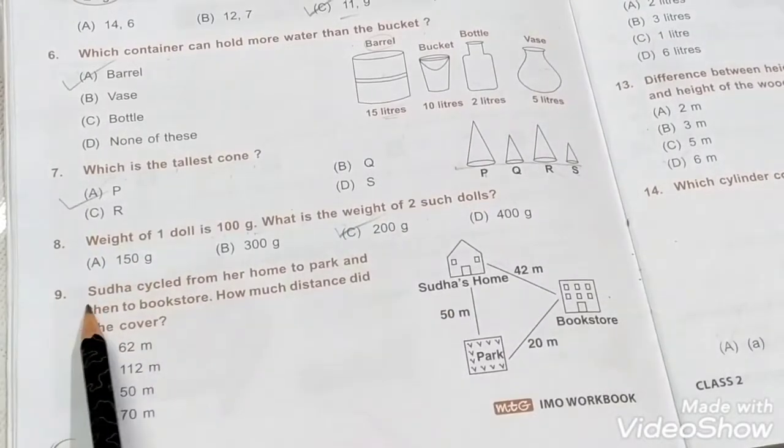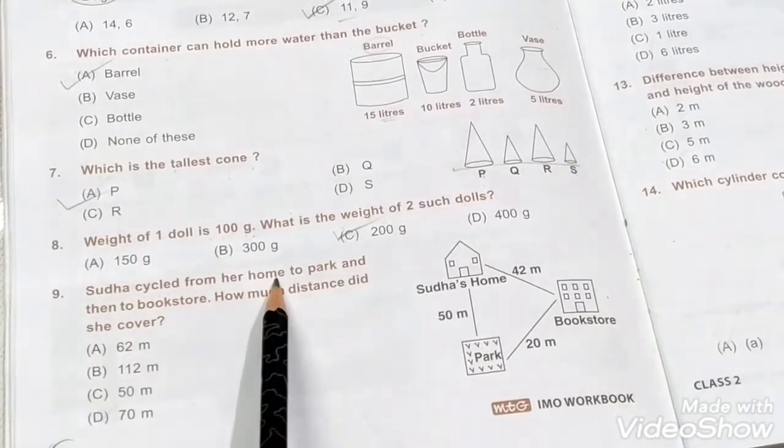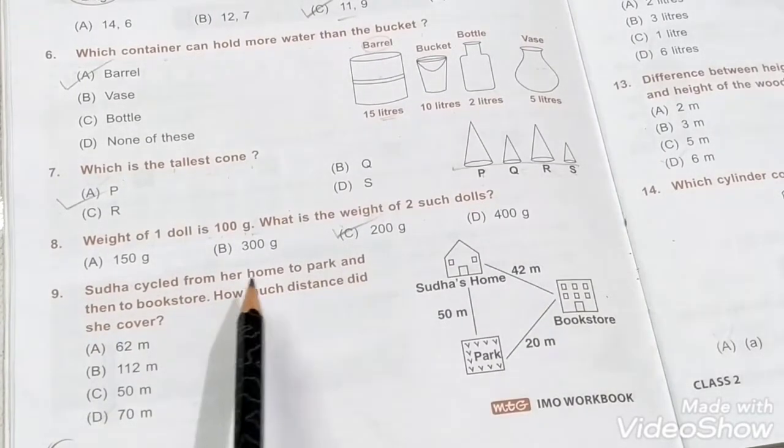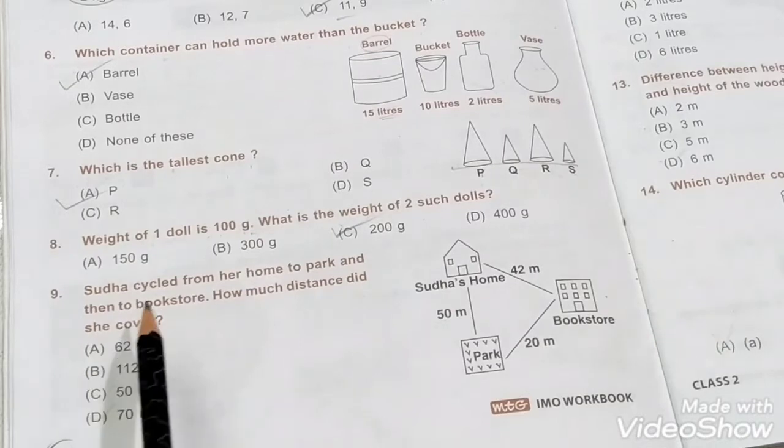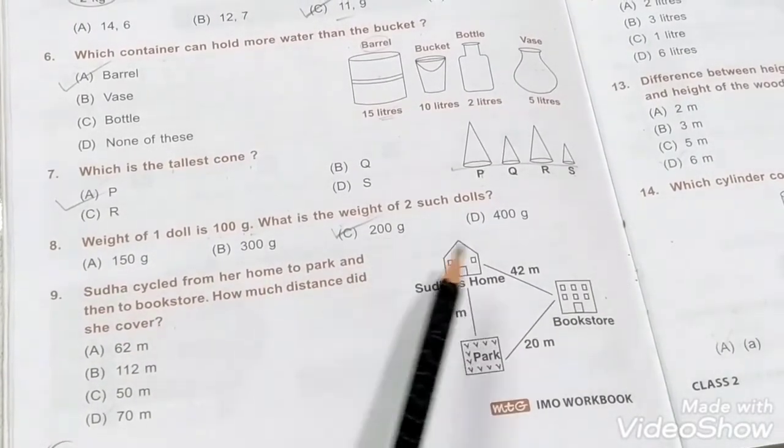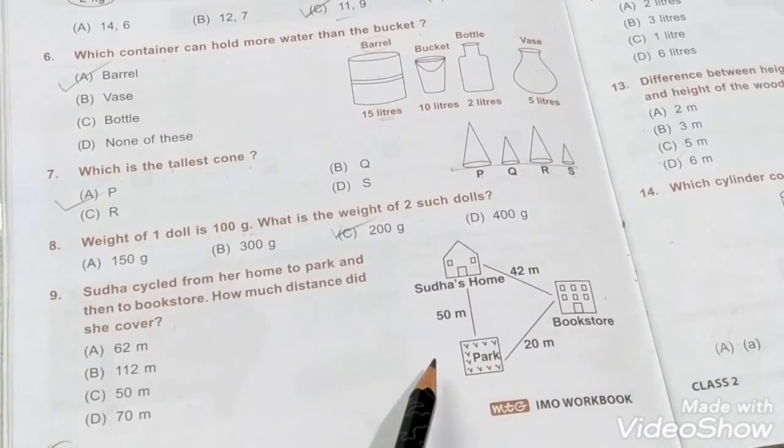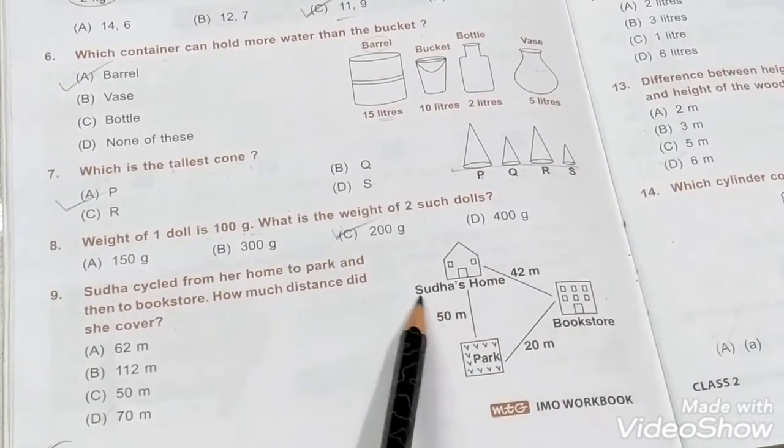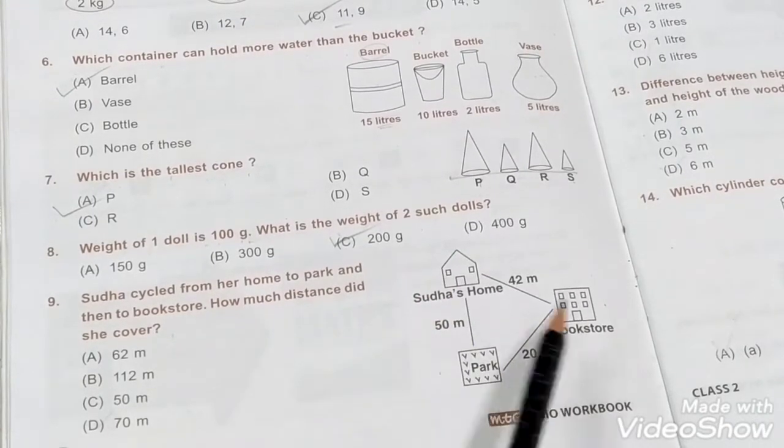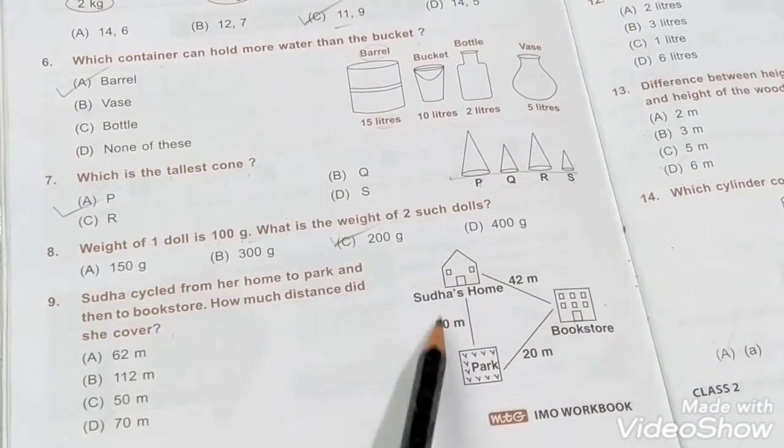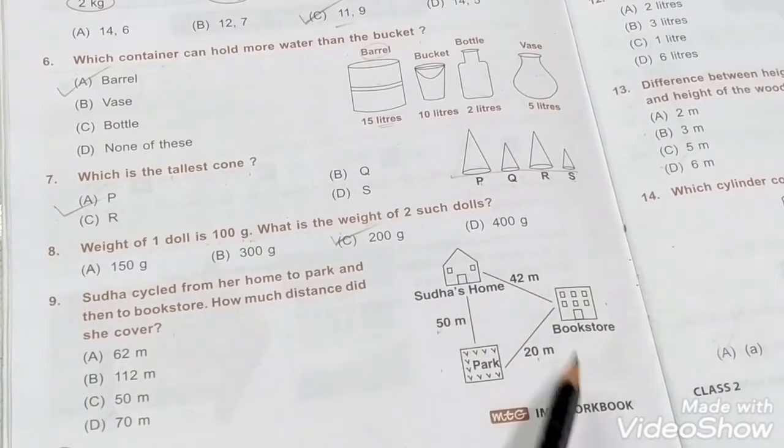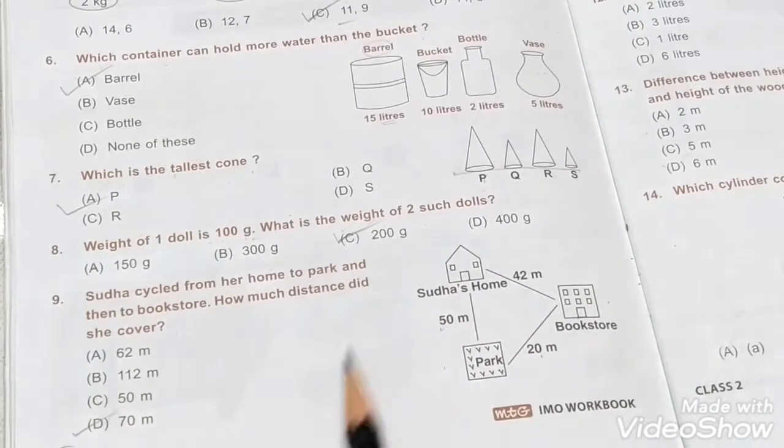Ninth question: Sudha cycled from her home to the park and then to the bookstore. How much distance did she cover? Overall you have to add it. Sudha's home is there, then park, then bookstore. So 50 plus 20, so 70 is the correct answer.